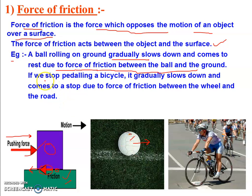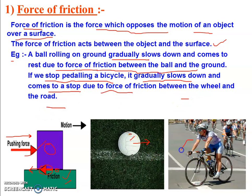In the second example, if we stop pedaling a bicycle, it gradually slows down and comes to a stop due to the force of friction between the wheels and the road. If the cyclist stops pedaling, the speed of the cycle slows down and after some time it gets stopped. This means the road surface is acting a force on the cycle wheel in the opposite direction, which is why its speed gradually decreases.